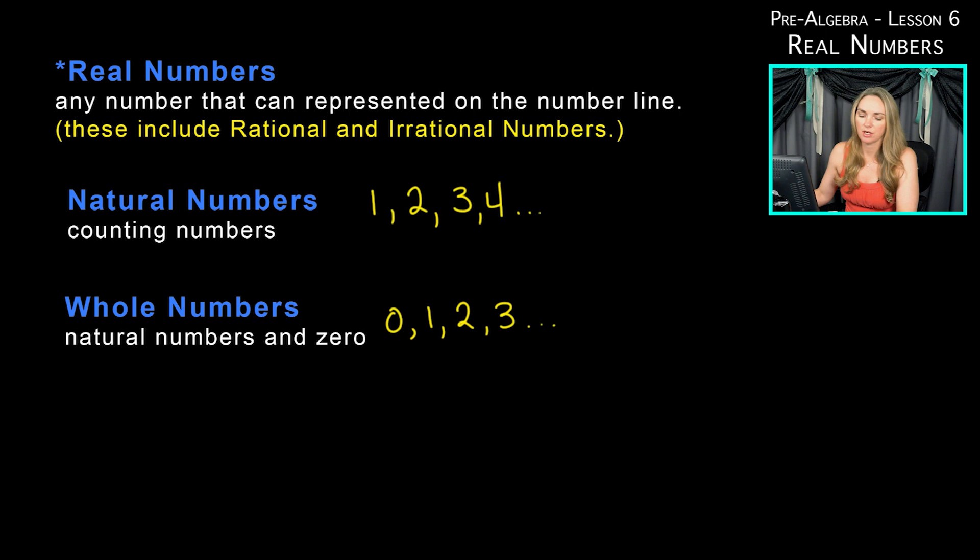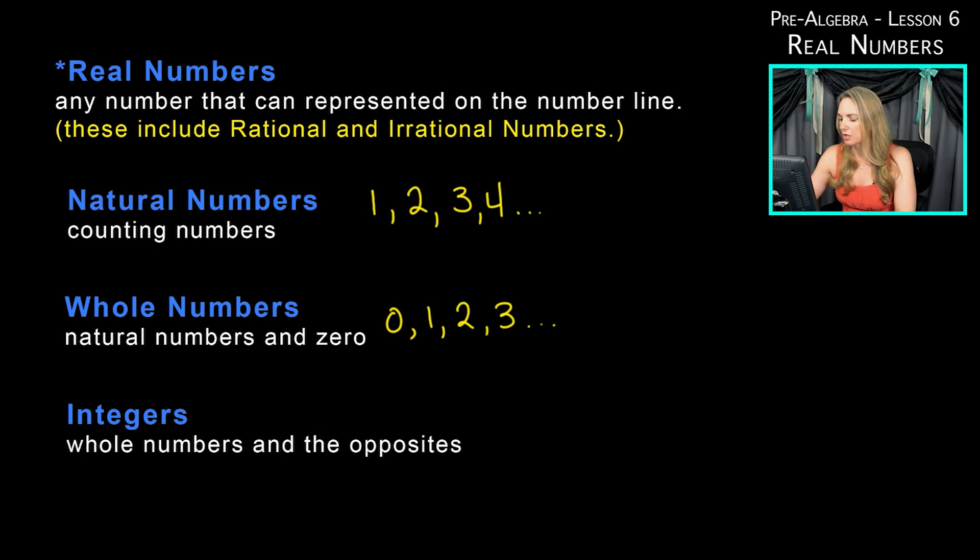Now we're going to talk about integers. As you got farther into math, you started learning about integers. Integers are whole numbers and the opposites. So integers start as far down in the negatives as you can go: negative three, negative two, negative one, zero, one, two, three, and it keeps going. So integers are whole numbers and the opposite. Those are your basic categories here.